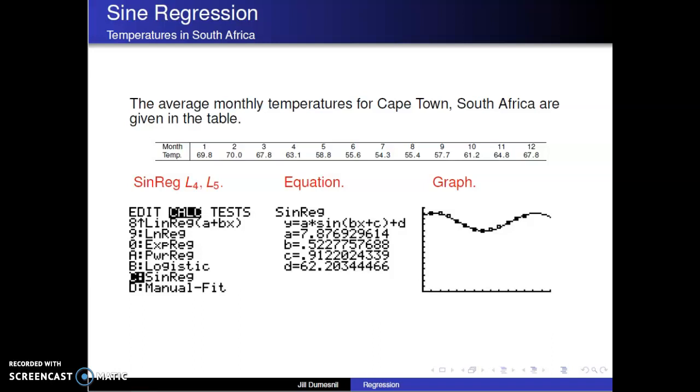Each of the given examples illustrates the general process of regression. Essentially, we identify the explanatory and response variables. Then produce a scatter plot of data to look for a general recognizable pattern. Finally, we choose the appropriate form of regression to produce a formula to model our data.